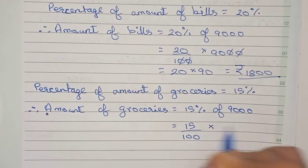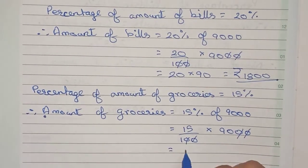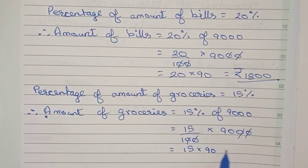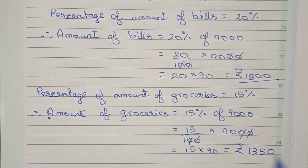Into 9,000. So firstly cut the zeros, so remains 15 into 90, which will be equal to rupees 1,350. So this is the amount spent on groceries.